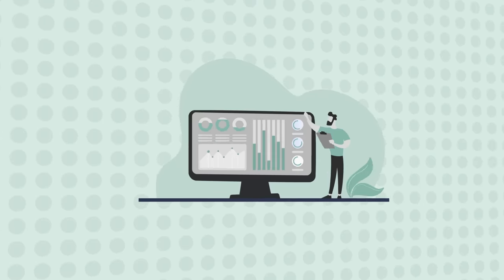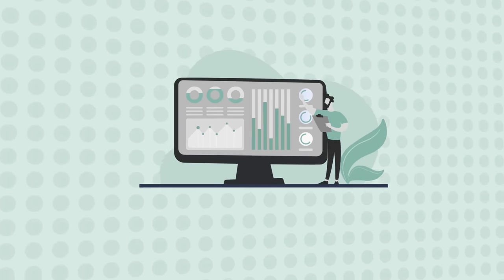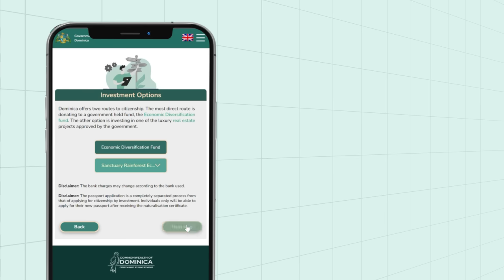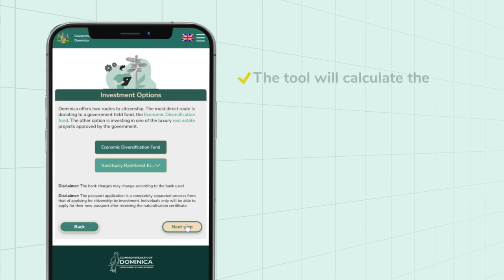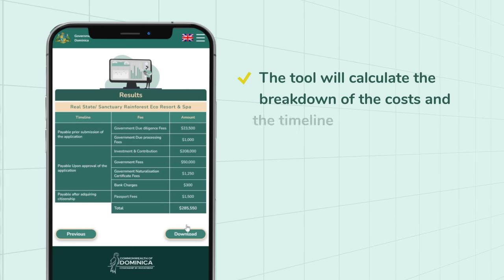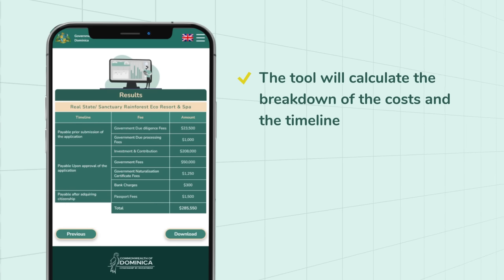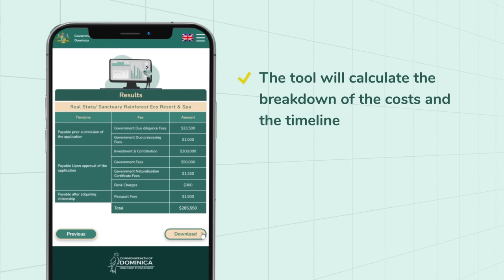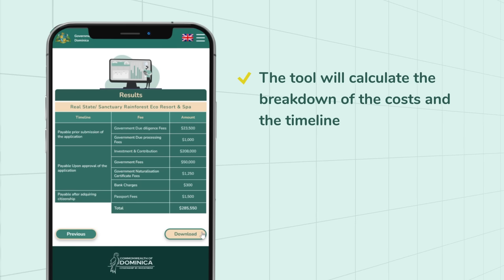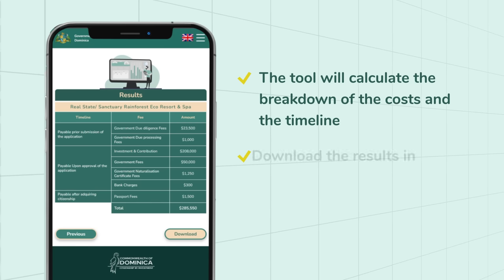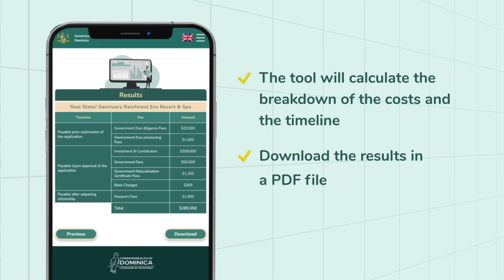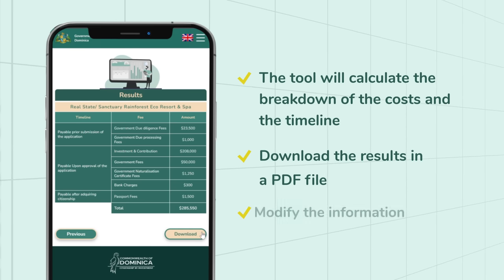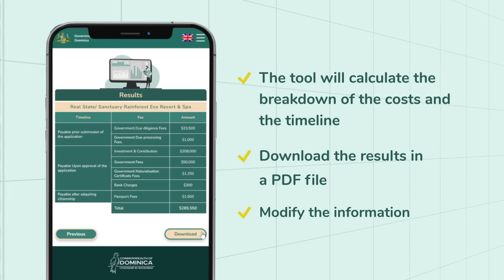Step 3: Click Get Results. This tool will calculate the breakdown of the costs of the application and the timeline when each fee is due in the process. Download the results in a PDF file and access them whenever you want. You can also modify the information to look at a variety of options.